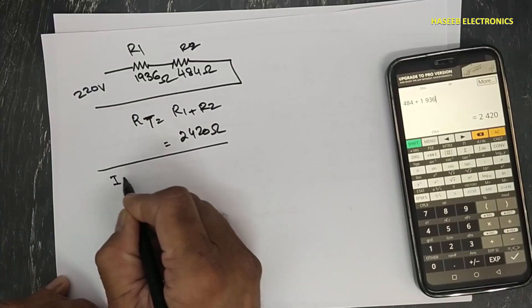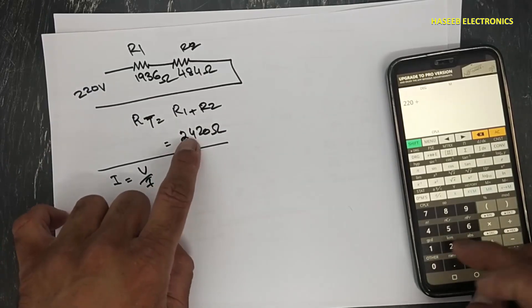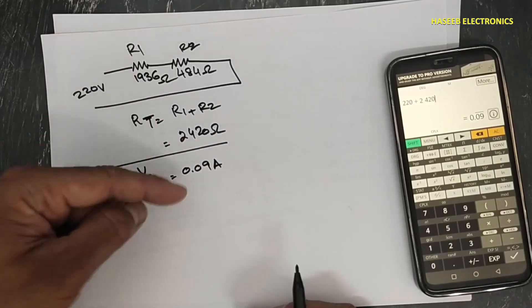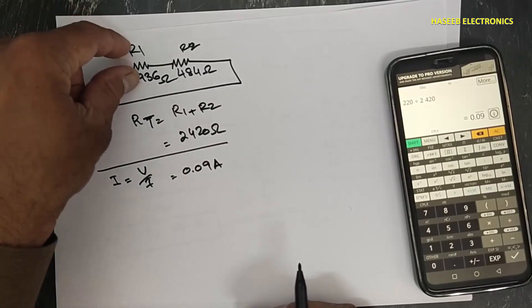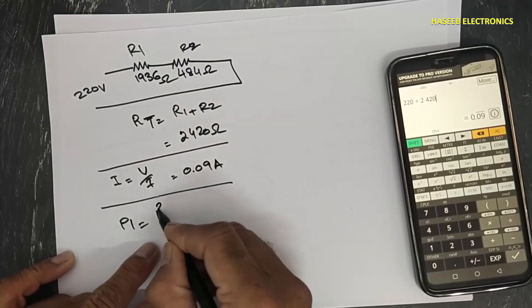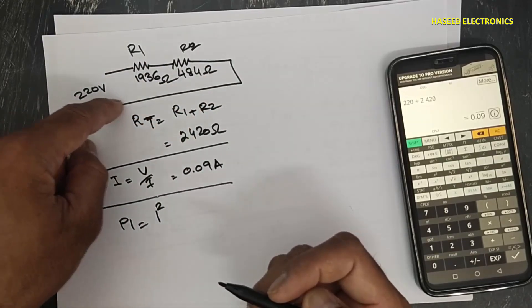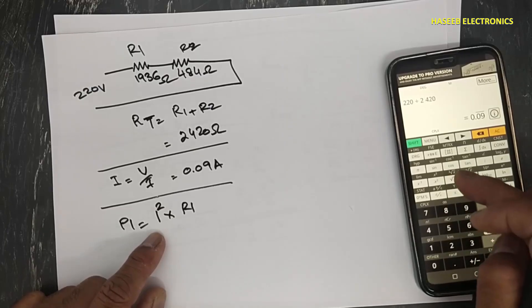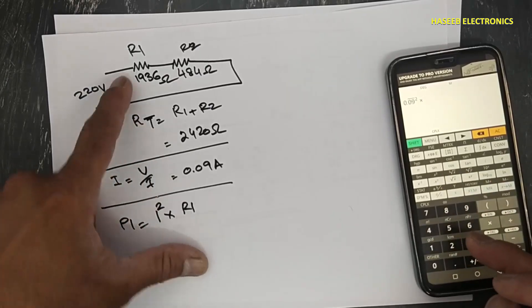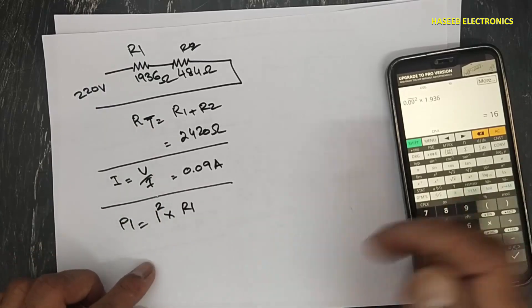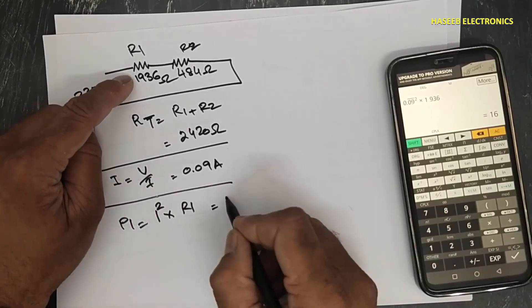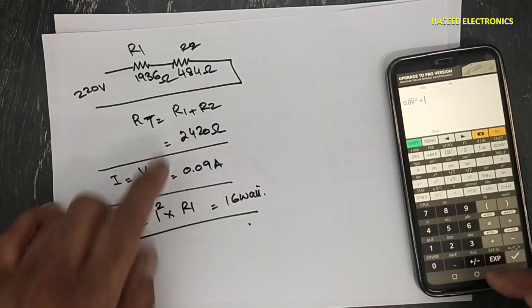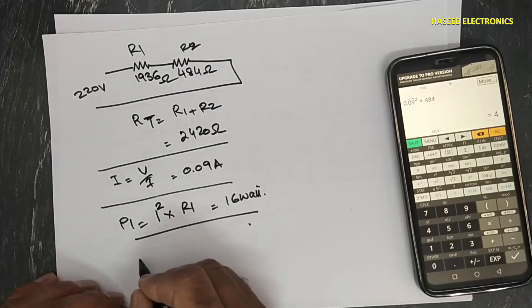What is the total current? 220 divided by 2420 equals 0.09 ampere. If you want to calculate the power for each segment, P1 is equal to I square, because I is now same in the circuit, I square R1. Take its square, multiply with 1936, first load will consume 16 watt. And if we check this one, 484, P2 is equal to I square R2, 4 watt.